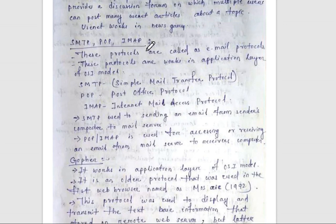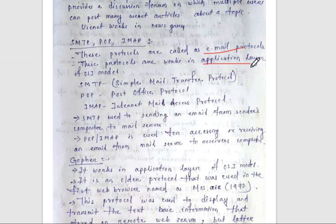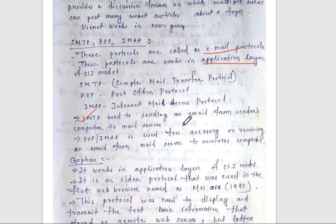SMTP, POP, and IMAP are called email protocols, and all work in the application layer of the OSI model. SMTP is Simple Mail Transfer Protocol, POP is Post Office Protocol, and IMAP is Internet Mail Access Protocol. SMTP is used for sending an email from the sender's computer to the mail server. POP and IMAP are used for accessing or receiving an email from the mail server to the receiver's computer.